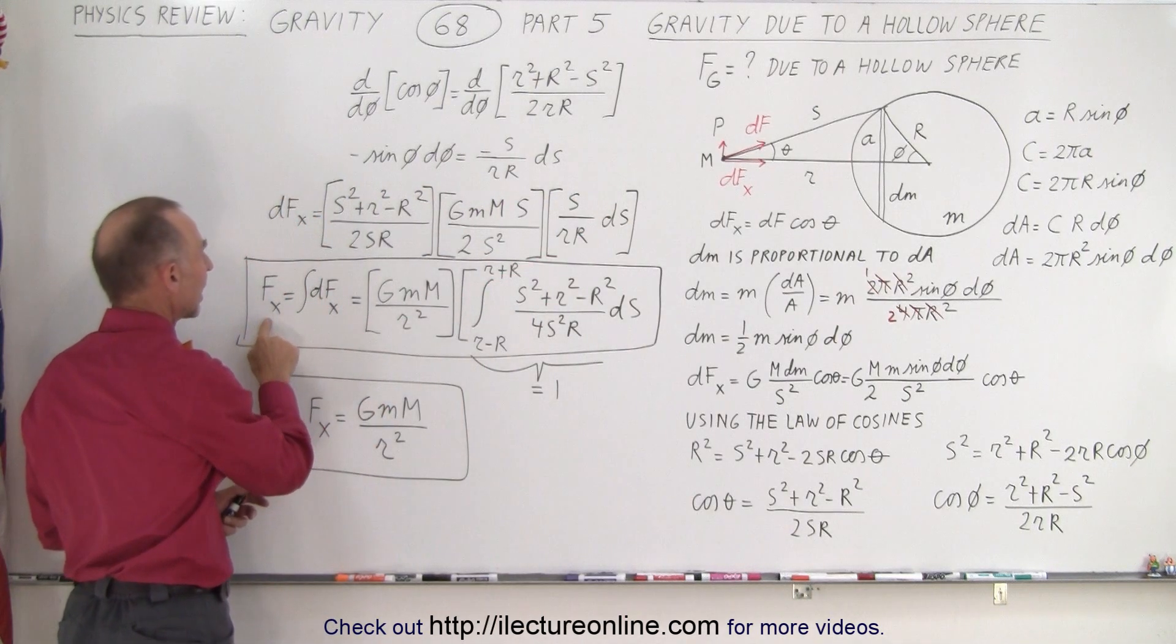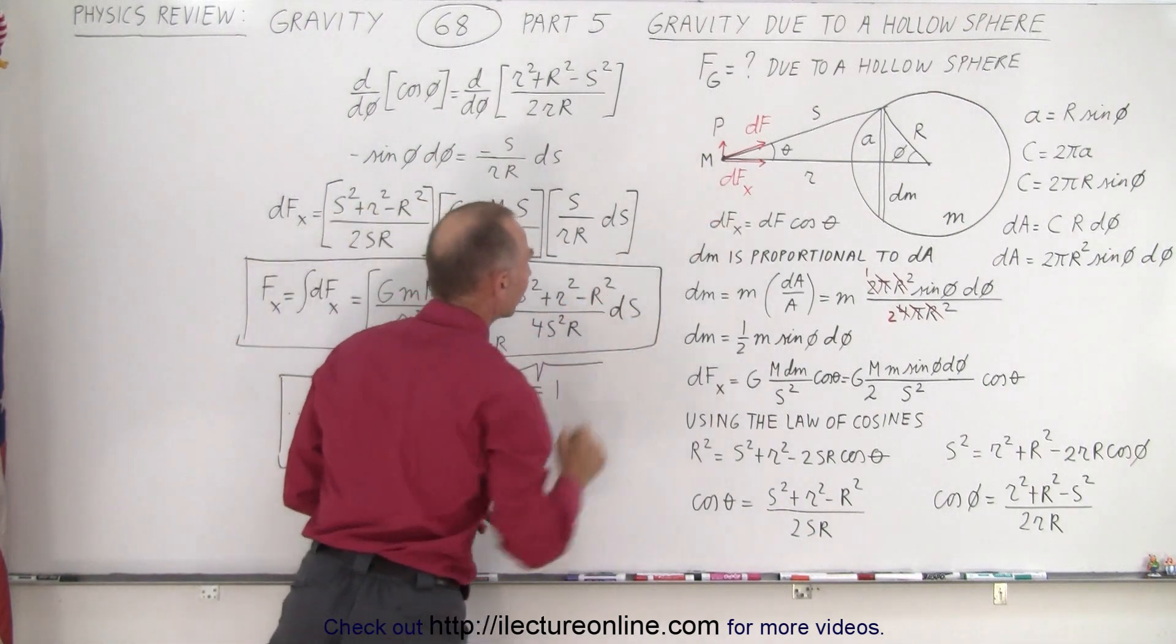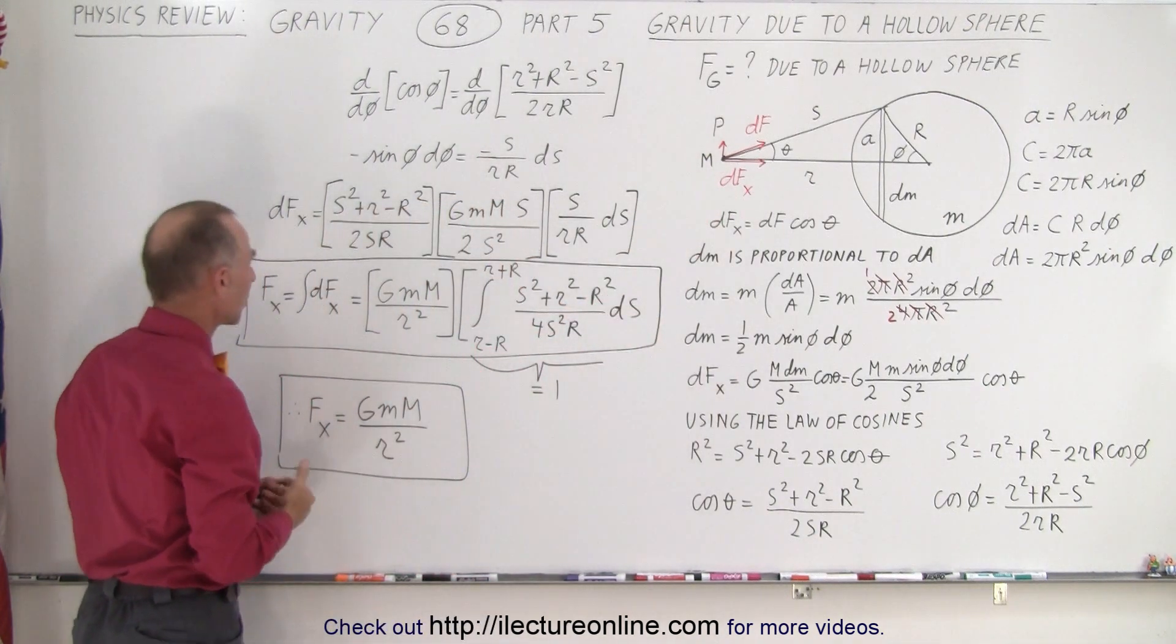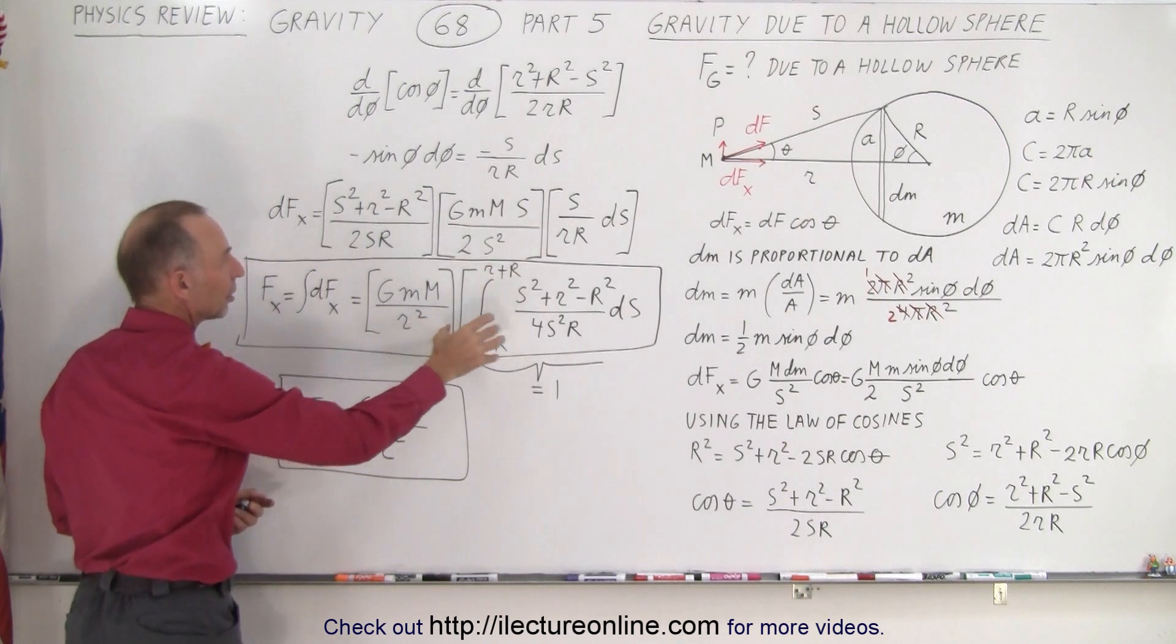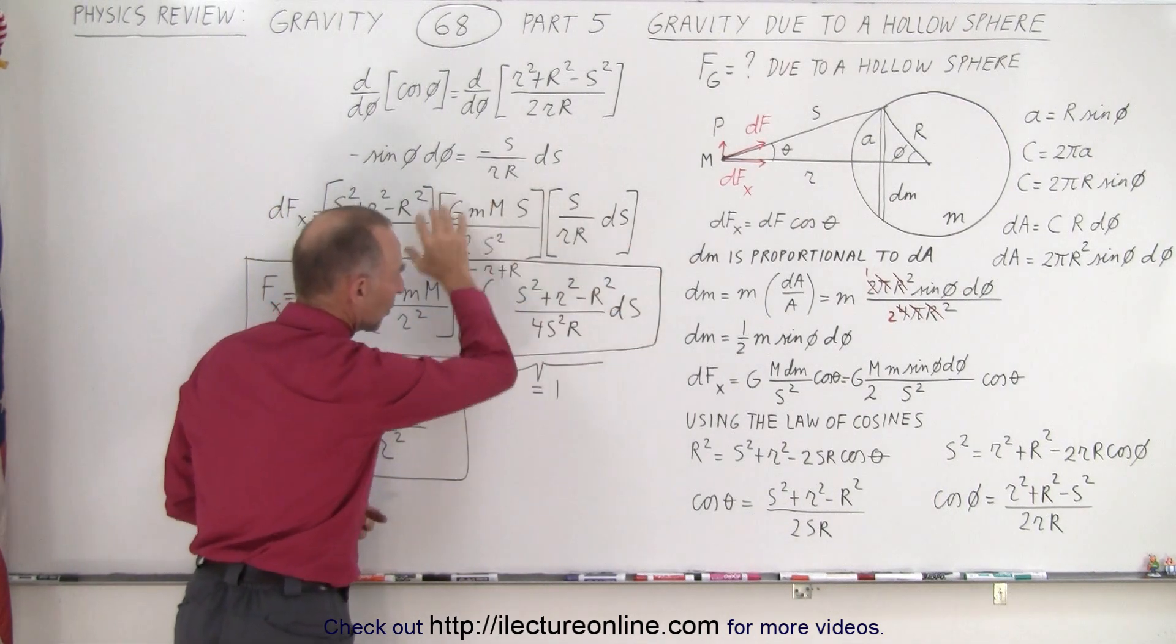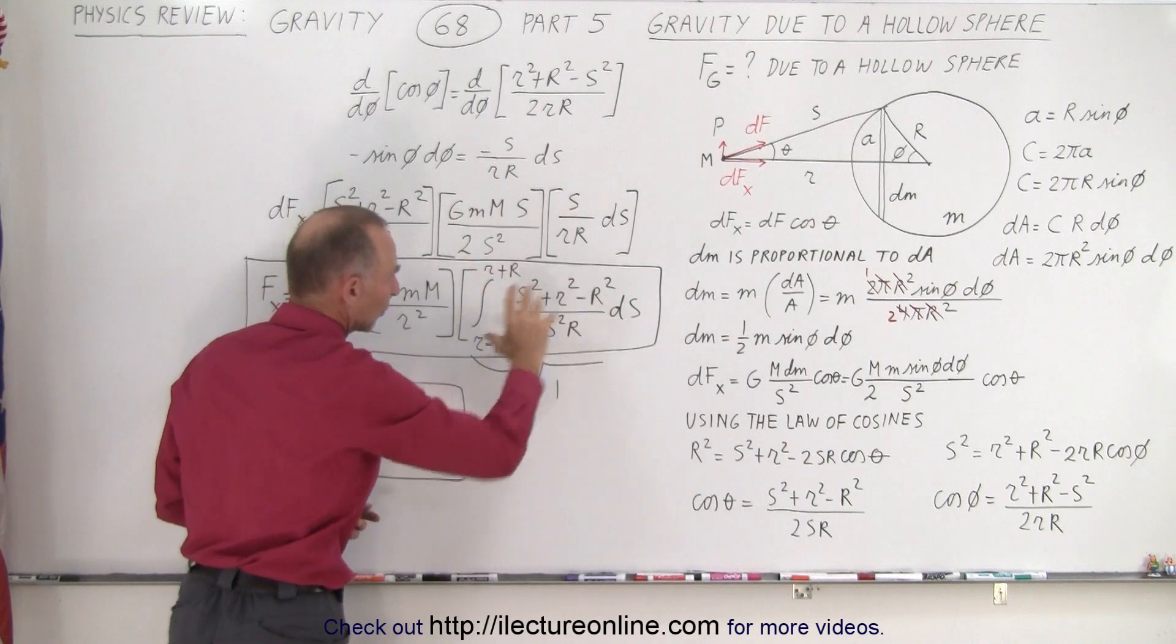Then when we integrate that, we get the force of gravity at this point right there. We call it F_x. That's what we want. And that means we have a constant times the integral of this expression times the s. So when we take this and algebraically simplify it, we get this.